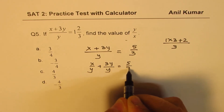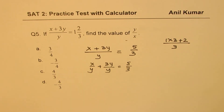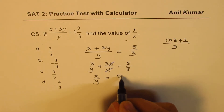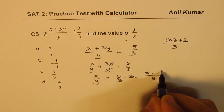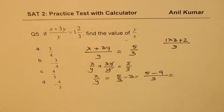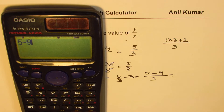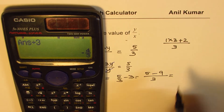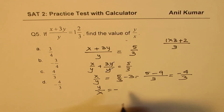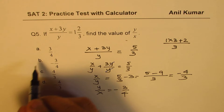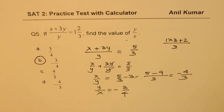The 3y over y simplifies to 3, so x over y equals 5 over 3 minus 3. With common denominator: (5 minus 9) over 3 equals negative 4 over 3. That is x over y, so y over x is the reciprocal: negative 3 over 4, which is option B.